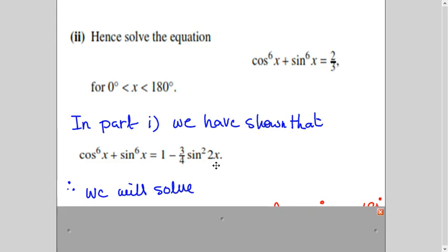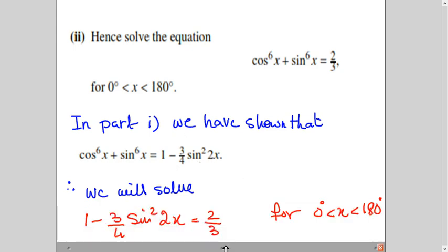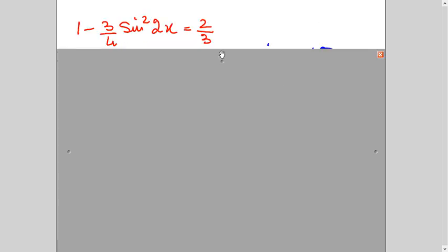So now to solve this equation, instead of this, I will use what I have proven. So my question or my equation will become this. So now I will take 2/3 on this side and this term on this side. And I have to solve for the range 0 to 180 degrees.